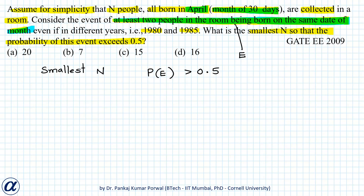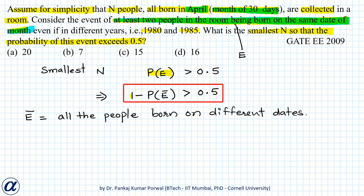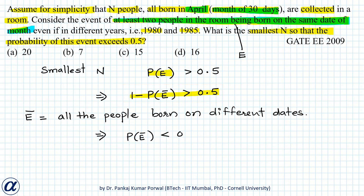But we can easily find P(E) through its complement. That is, 1 minus P(E complement) will be greater than 0.5, where E-bar is the complement of E — that is, all the people in the room are born on different dates. If I simplify this inequality, I get P(E-bar) less than 0.5. So we want to find the smallest n such that P(E-bar) is less than 0.5.